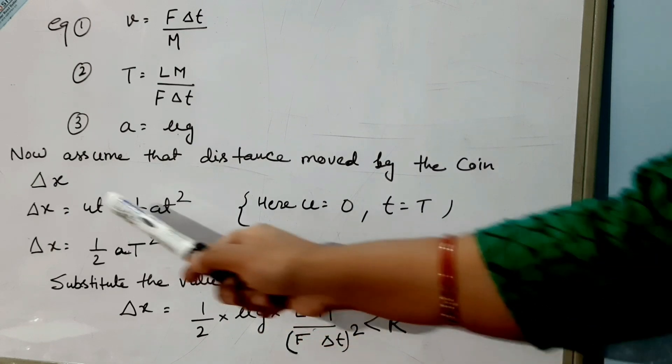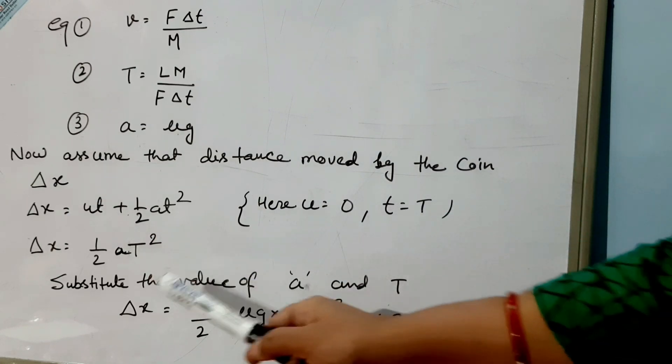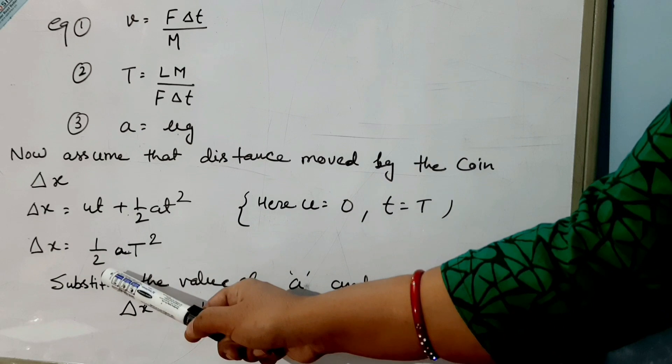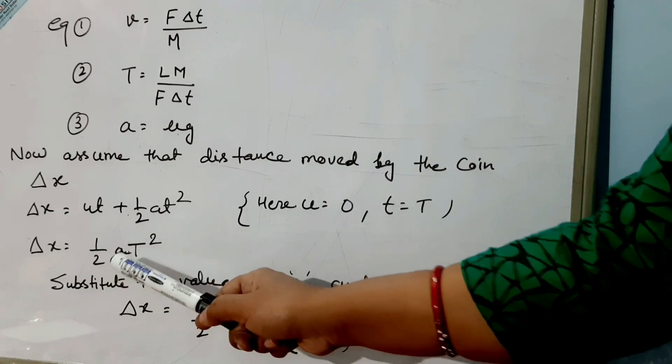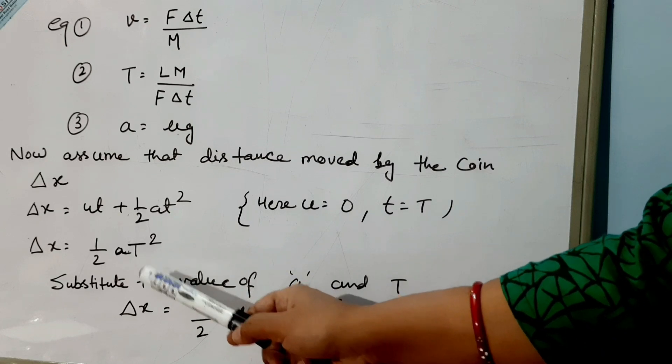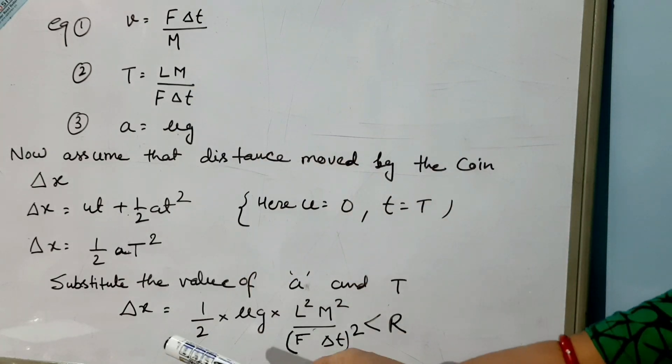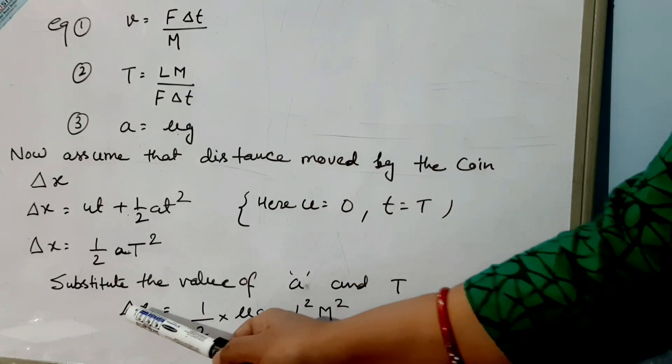Since u is zero, Δx will be equal to ½at². Now we'll substitute the value of a and t from equations 2 and 3. So we'll get that Δx will be equal to ½μg(LM/FΔt)².